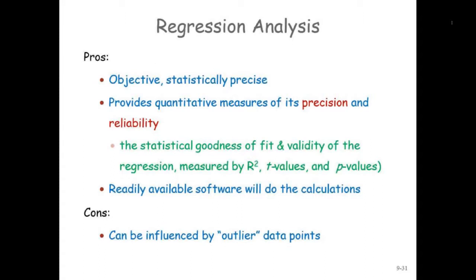The pros: it's statistically precise, it gives you more information — it doesn't only give you the line, it tells you how good your line is. They say it's harder in the text, but it's not harder because your calculator can do it for you; it figures it out and does the least squares math. It can also be influenced by outliers, but not nearly as much as the high-low.